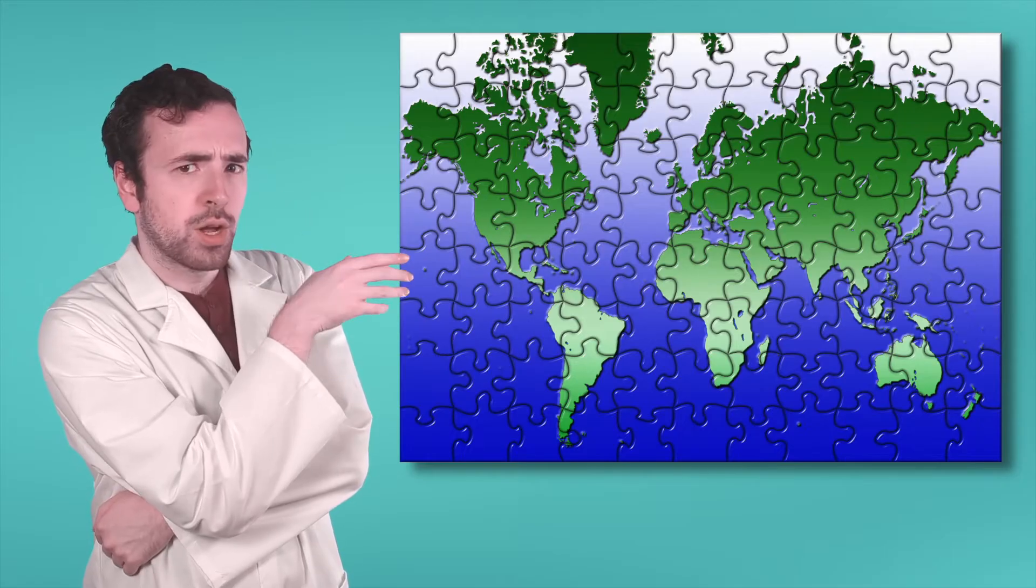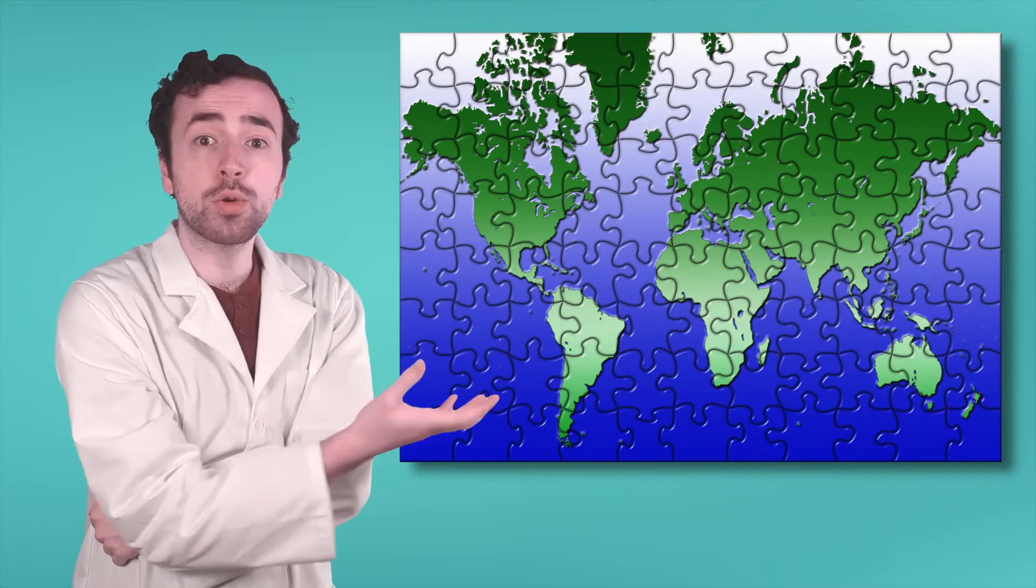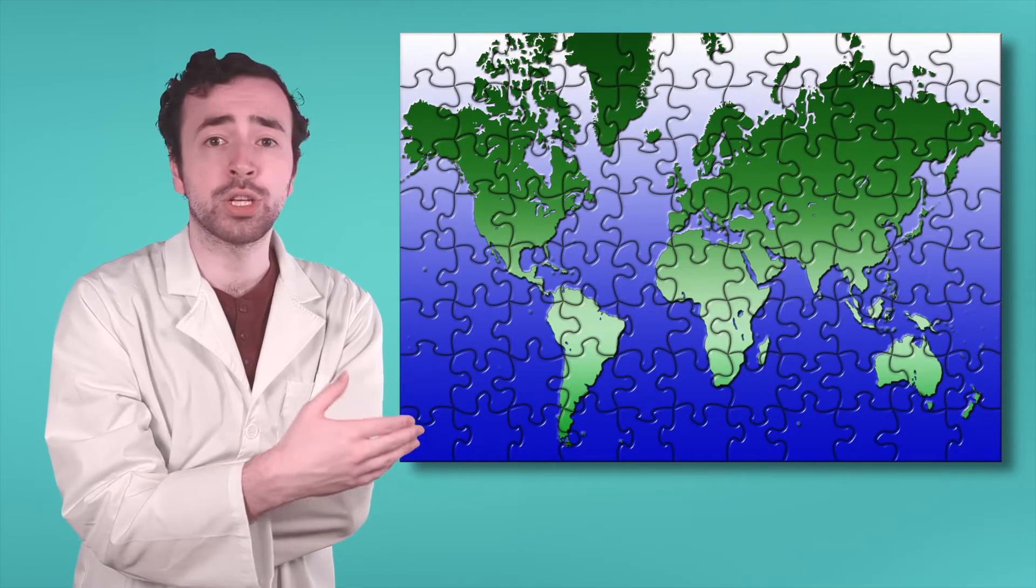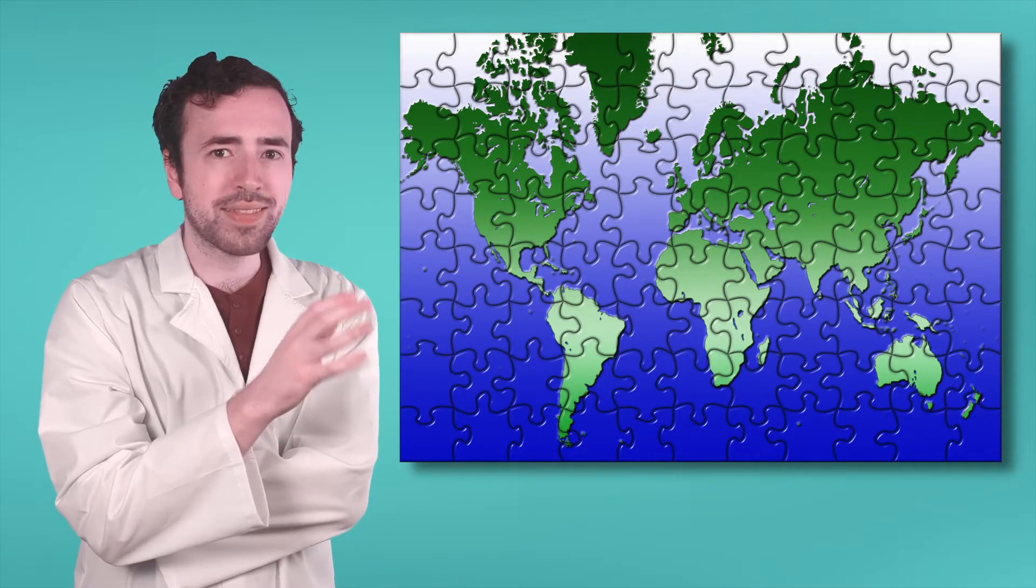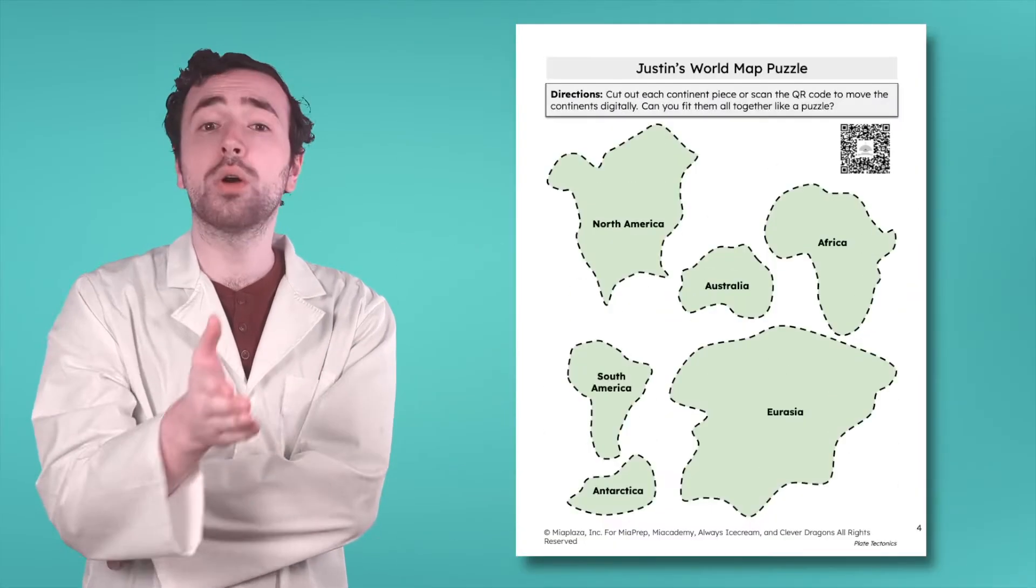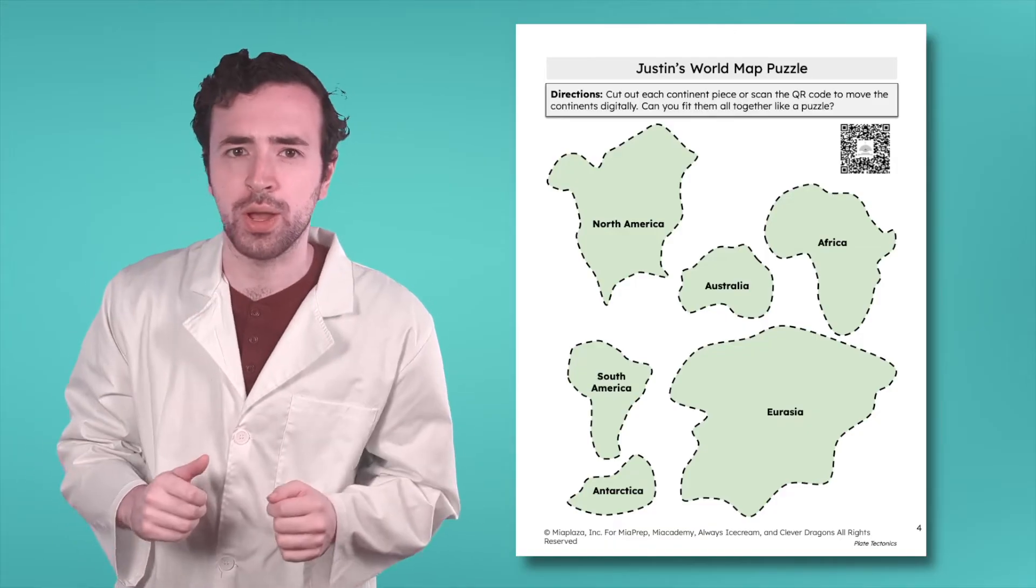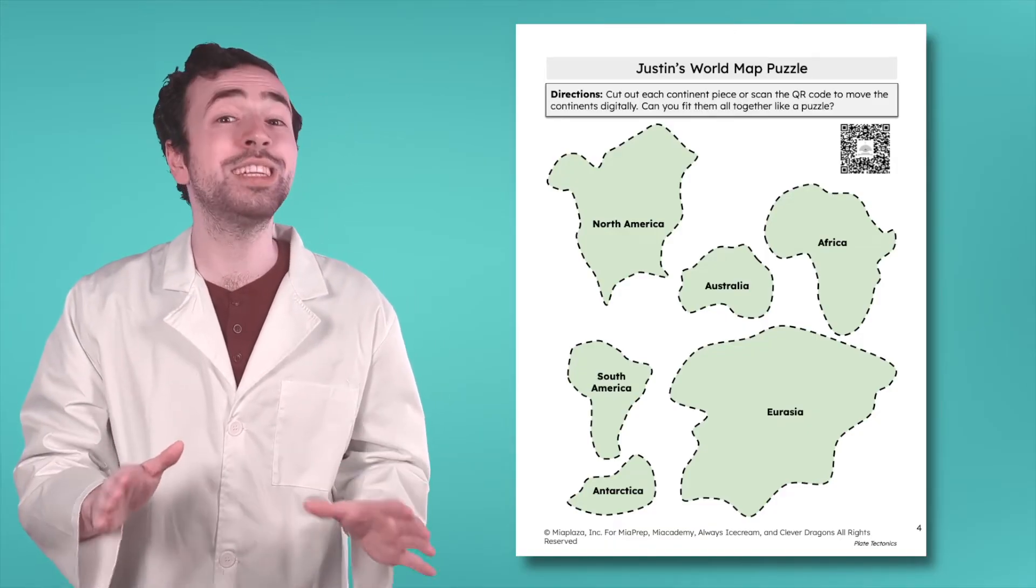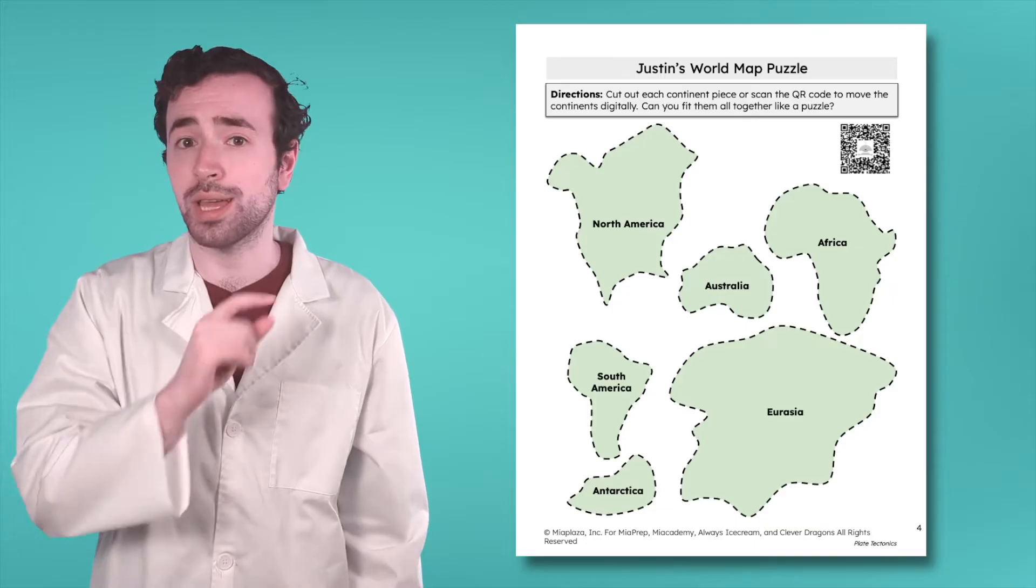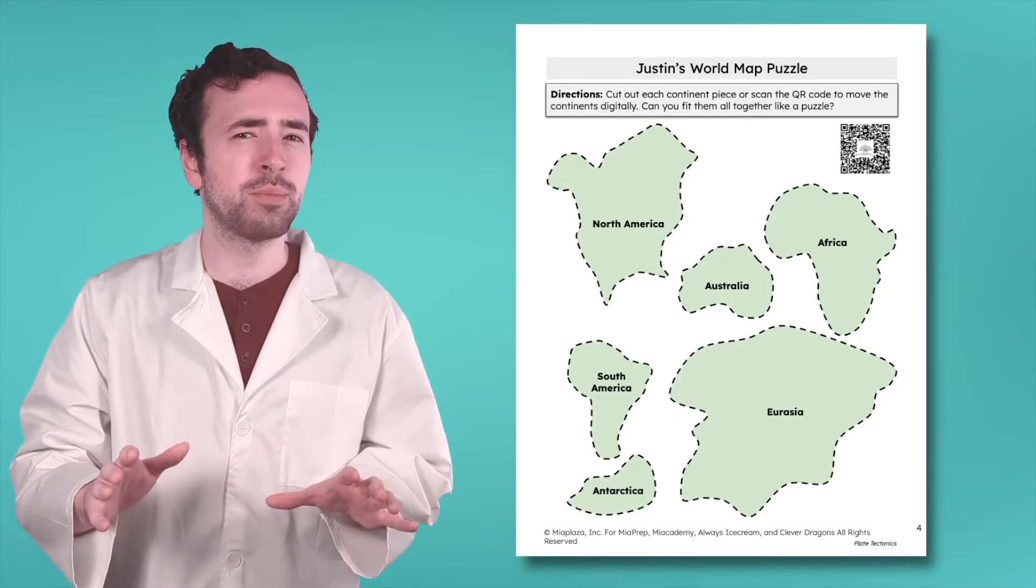You know, I'm still puzzled by this. The longer I look, the more Earth's continents or large pieces of land like Asia and North America look like they'd fit together. Can you help me with this scientists? Along with your guided notes, I've added a version of my world map puzzle just for you. Pause the video and cut out each continent piece, or scan the QR code to move the continents digitally. Can you try to fit them all together like a puzzle?